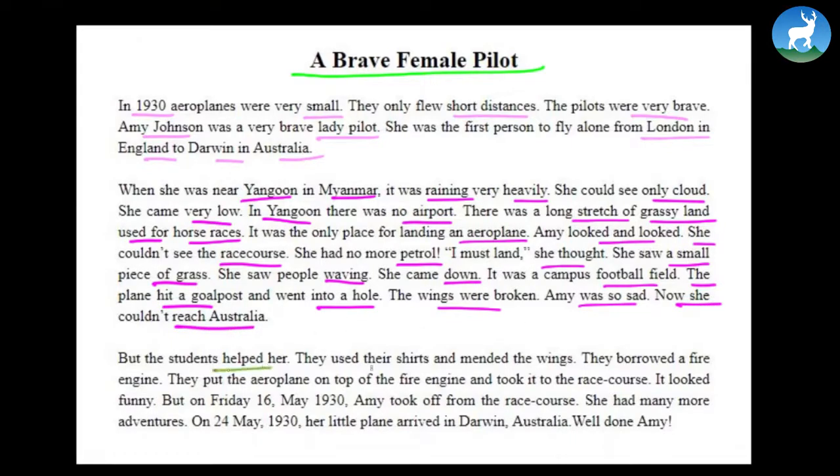But the students helped her. They used their shirts and mended the wings. They borrowed a fire engine. They put the aeroplane on top of the fire engine and took it to the race course. It looked funny. But on Friday, 16 May 1930, Amy took off from the race course. She had many more adventures. On May 24, 1930, her little plane arrived in Darwin, Australia.